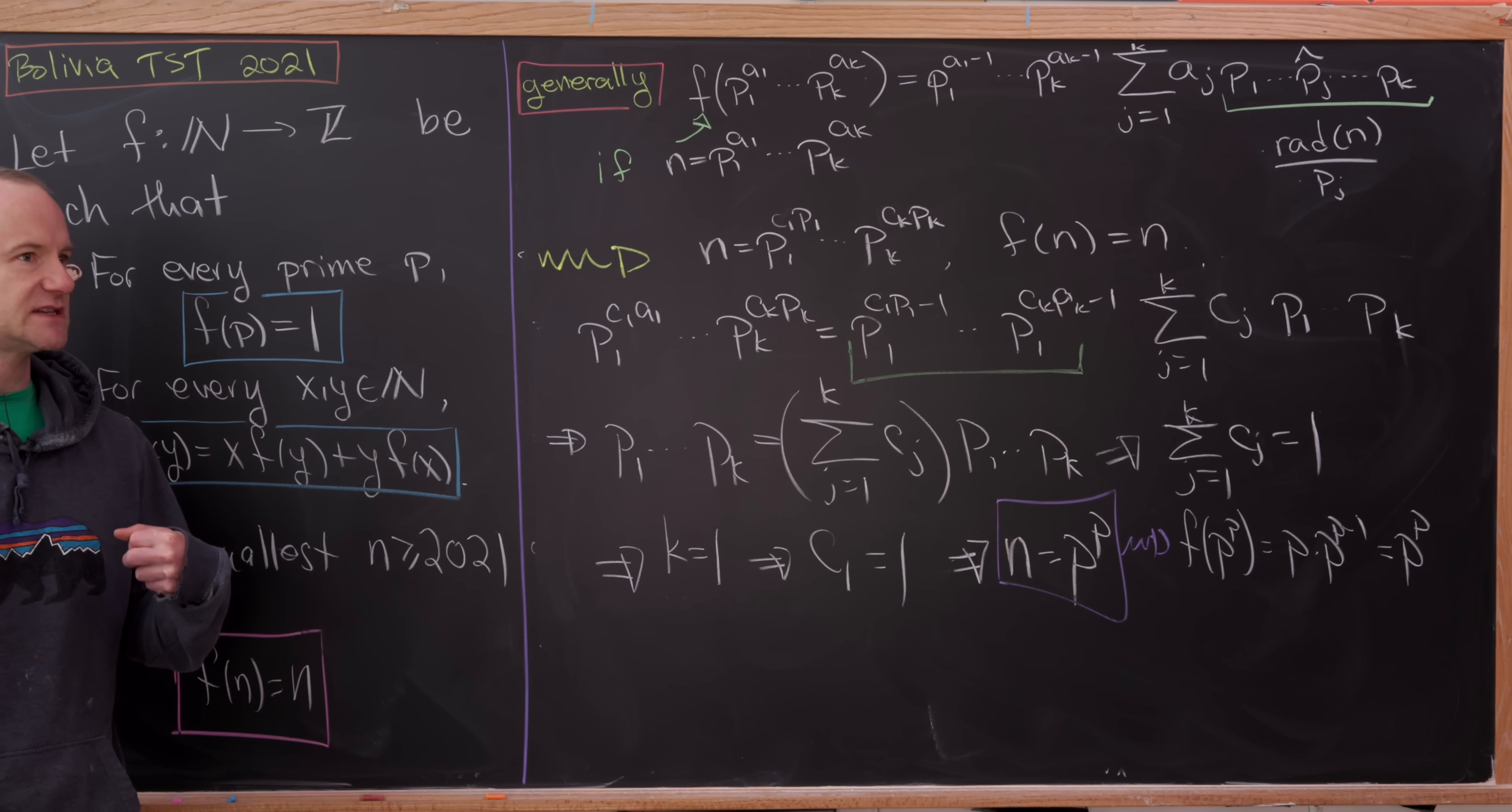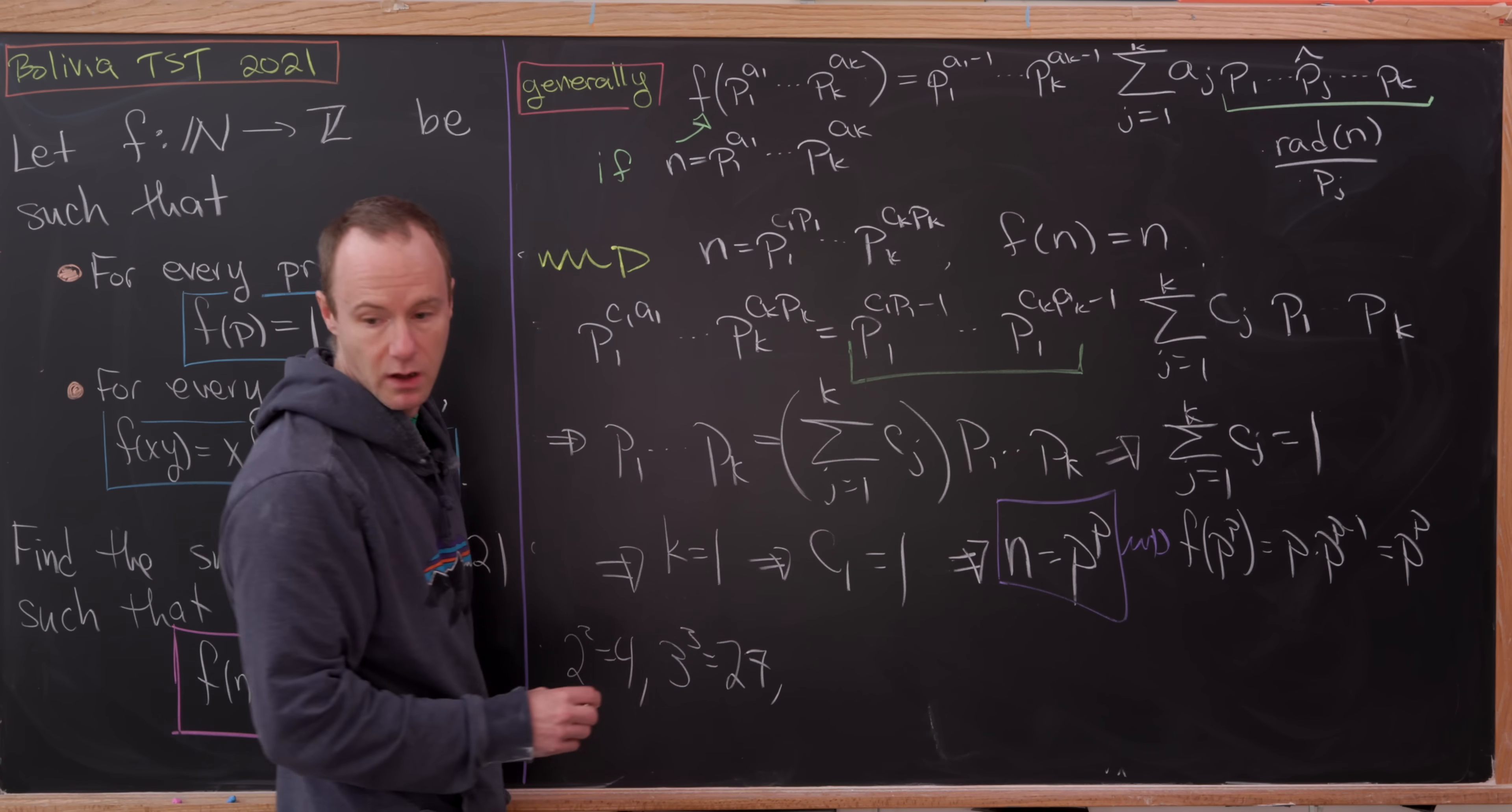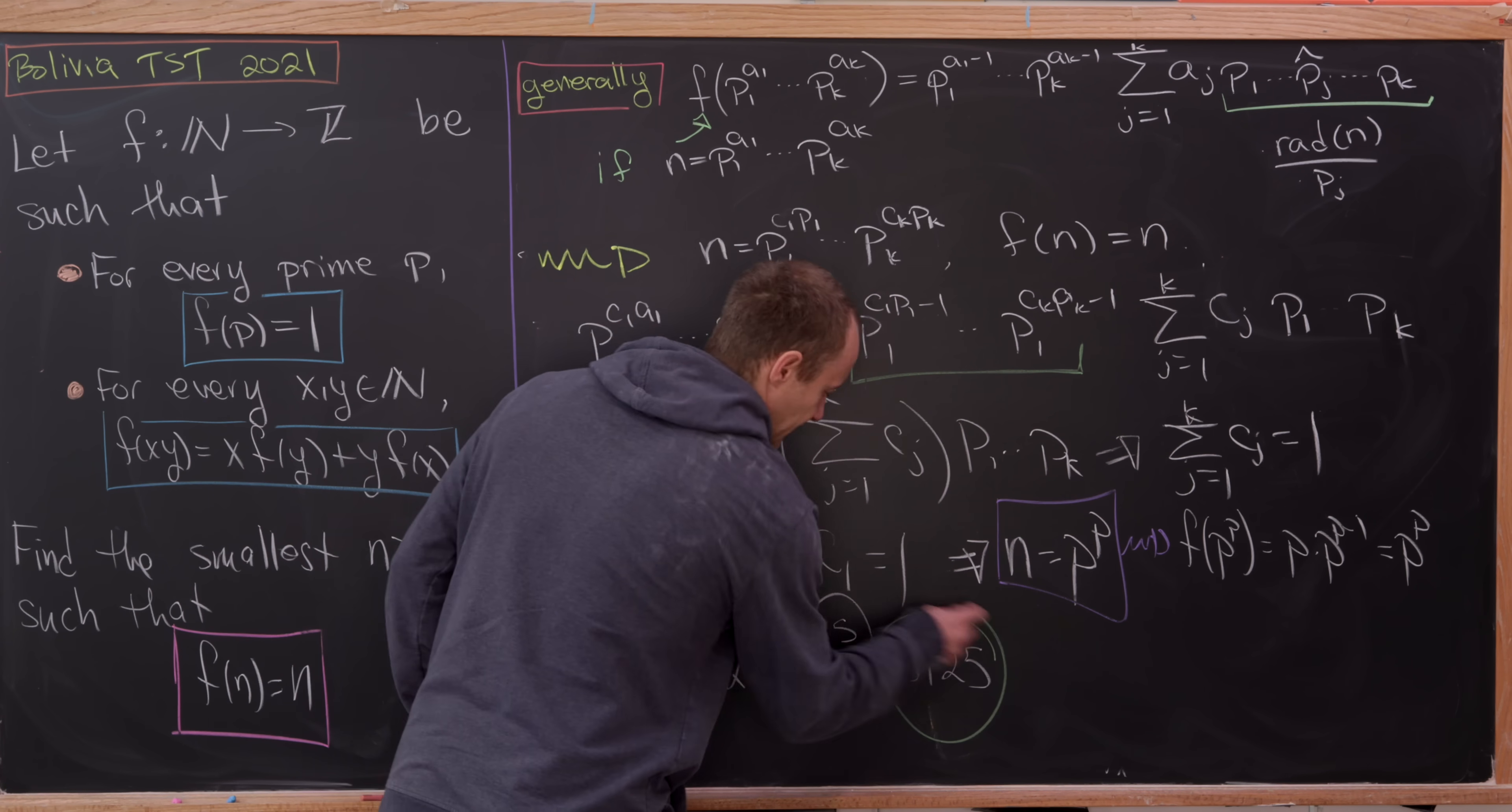And now we simply need to make a list of the first several primes and their p powers and see which one first is larger than 2021. So notice that 2² equals 4, that's too small. 3³ equals 27, that's too small. And then next up 5⁵ equals 3125. That's just right. So that means our answer, our number that satisfies this equation that is the first one larger than 2021 is 5⁵ or 3125.